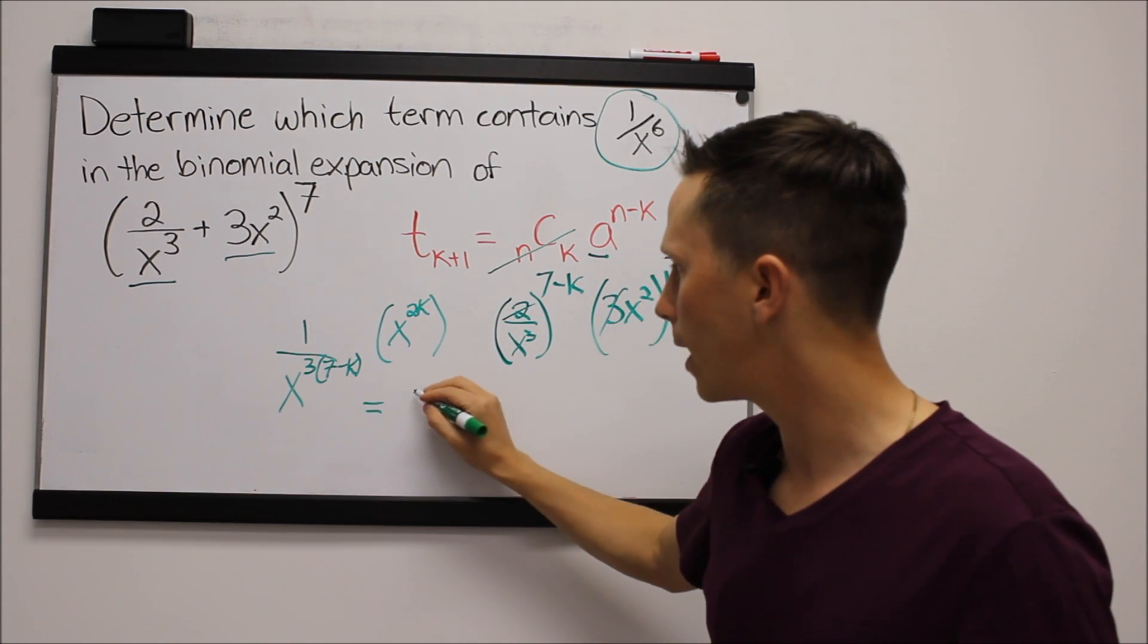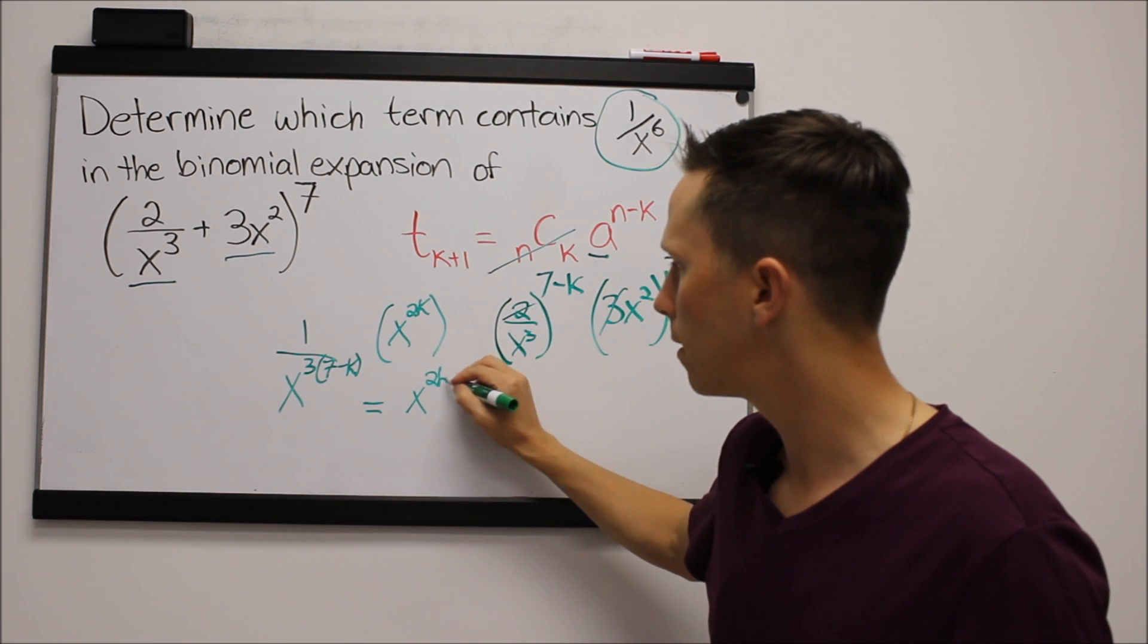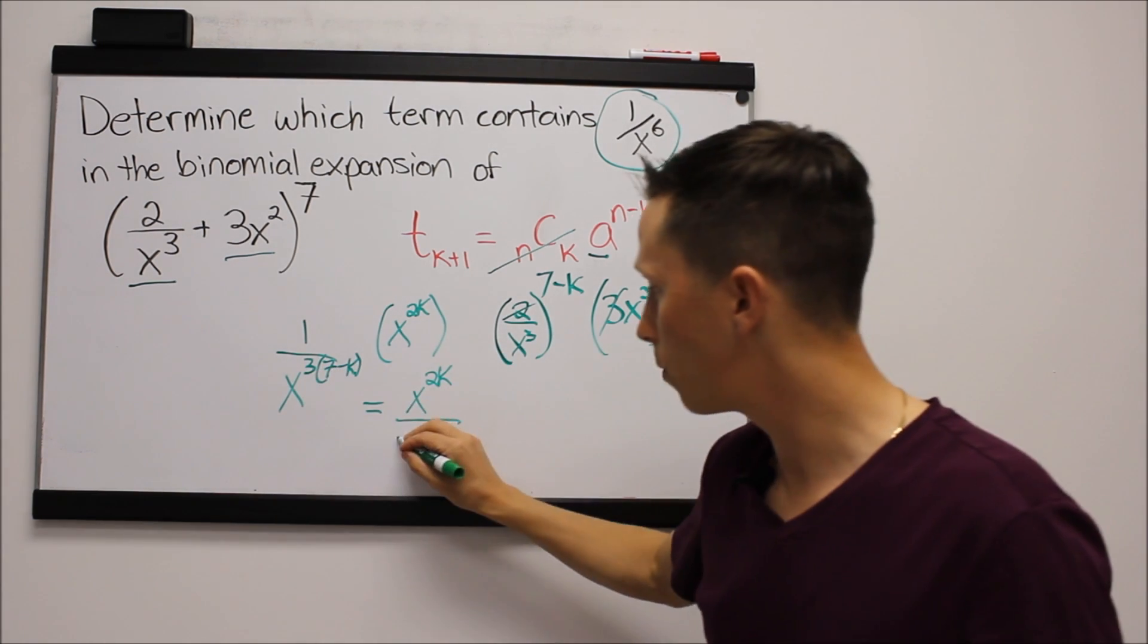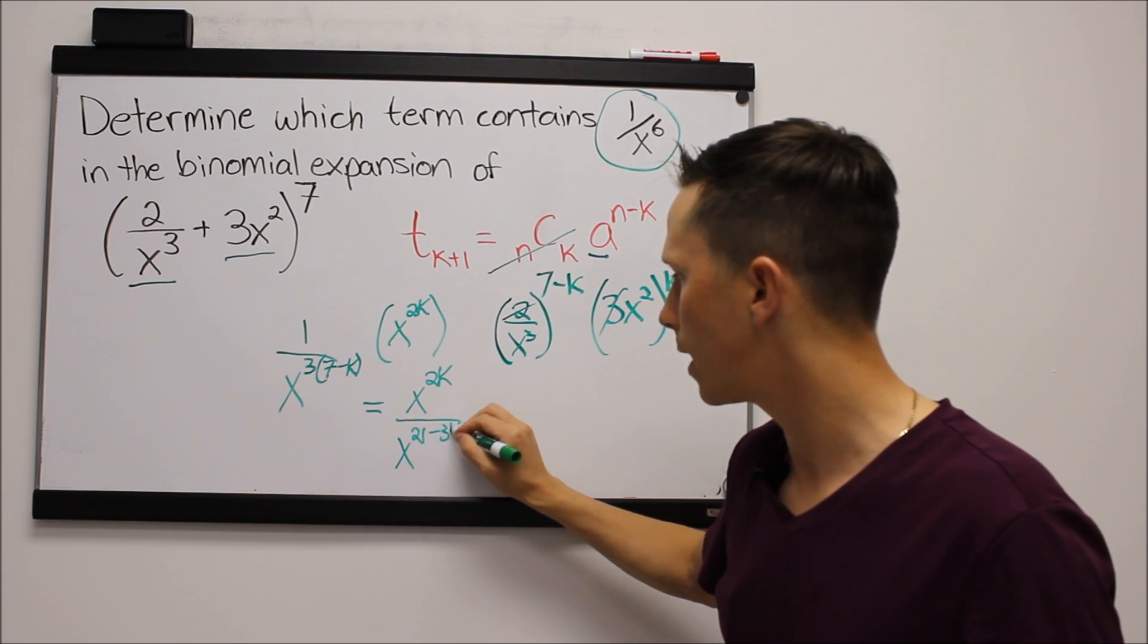So if we simplify this, we get x to the 2k over x to the...multiply this through, we get x to the 21 minus 3k.